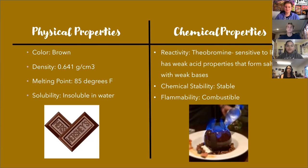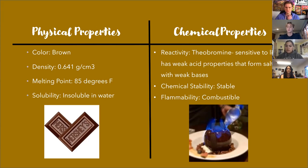Like everything in the world, chocolate has its own physical and chemical properties. Physical properties are measurable properties that define its physical state, while chemical properties are characteristics of a substance evident through a chemical reaction. Some physical properties of Hershey's milk chocolate include its color — obviously brown — a density of 0.641 grams per centimeter cubed, and it is insoluble in water. For chemical properties, it's easier to break it down into smaller components. Theobromine is sensitive to light and forms salts when combined with weak bases, because it has properties of a weak acid. Chocolate is also chemically stable and combustible.